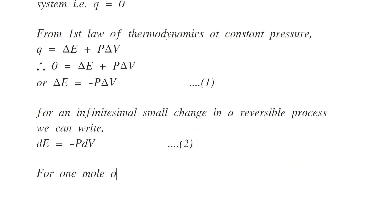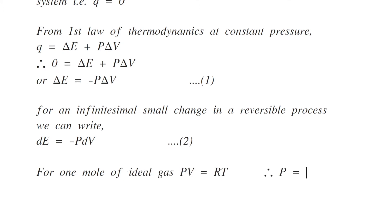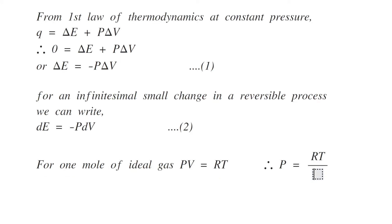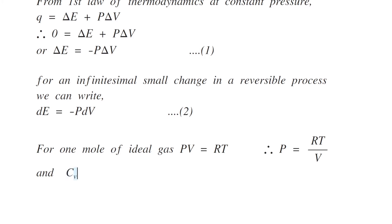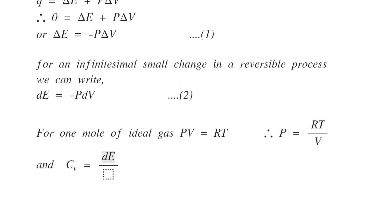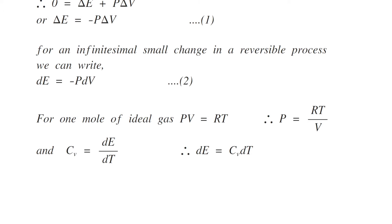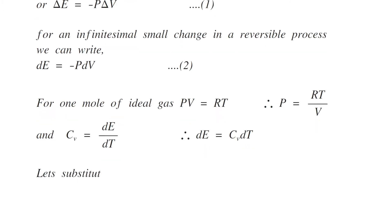For one mole of an ideal gas, PV is equal to RT, therefore P is equal to RT by V. Also, CV is equal to dE by dT, therefore dE is equal to CV dT.